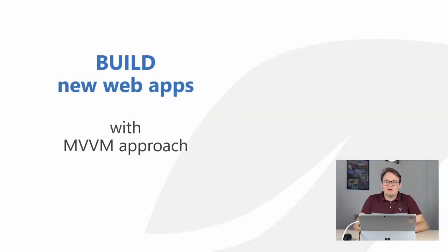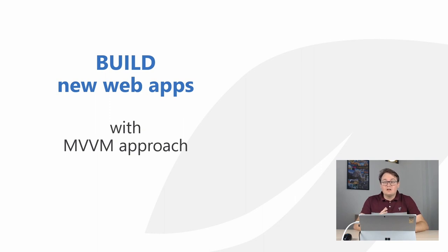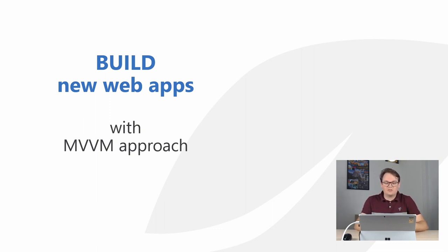DotVVM is an open source framework with two main goals. The first is to build web applications using the Model-View-ViewModel approach. This approach is familiar to desktop developers who have been using WPF, Silverlight, or Xamarin.Forms. If you like this way of building applications, you can use DotVVM for web.